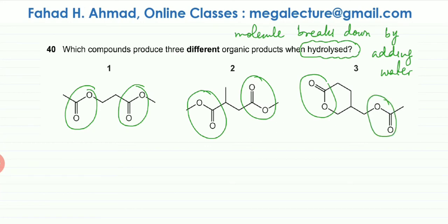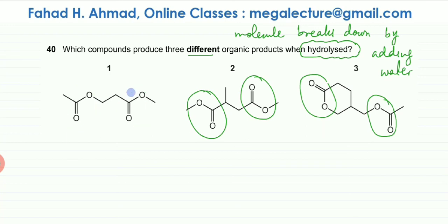The question is which compounds would produce three different organic compounds when hydrolyzed. Let's pick the first molecule and try to break it down. The ester links are going to break — this ester link breaks over here and this ester link breaks over here.